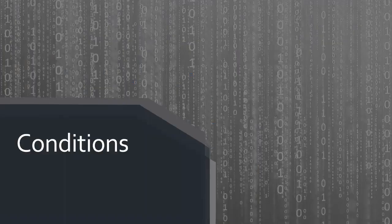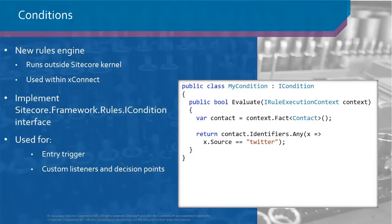Conditions, or rules, are used in marketing automation specifically for the campaign entry trigger, listeners, and decision points. The conditions use the new Sitecore rules engine, which is also used by XConnect. Some of you may wonder why we introduced this new rules engine when we already had one — why learn another API?